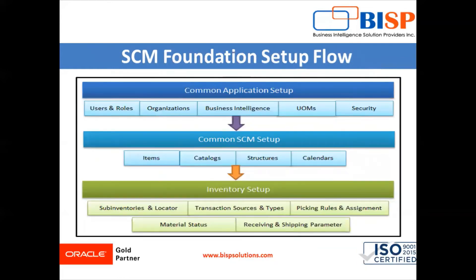Looking at the Supply Chain Management foundation setup flow, there are certain things we need to set up that are common to many applications. At the top you have your users and roles — users let you log into the system, and roles provide the privileges to do things. You have different types of organizations like cost organization, item organization, and inventory organization, all supported by business intelligence. You also need to set up your units of measure, and the security settings for what type of data access you give to your organization.